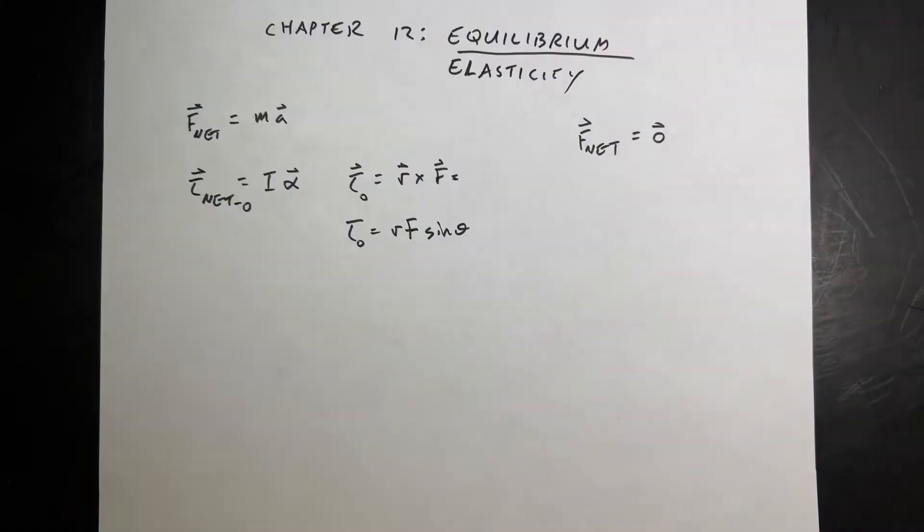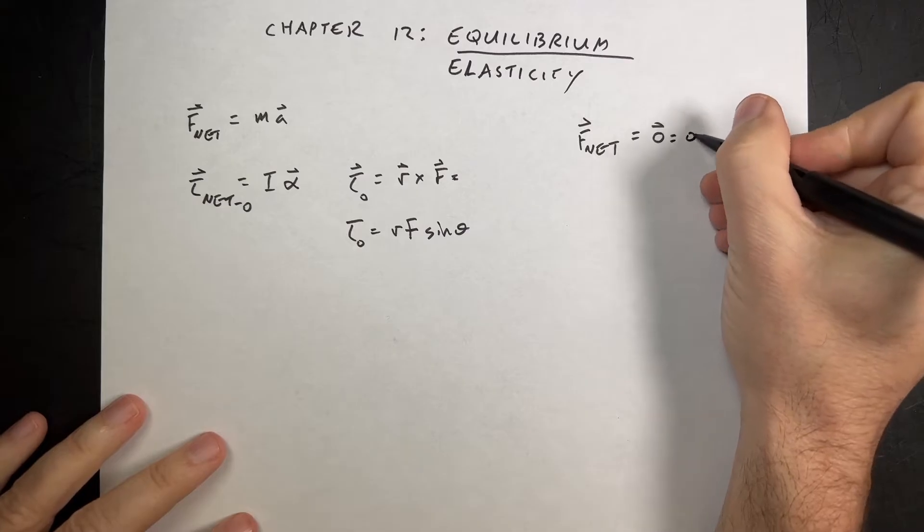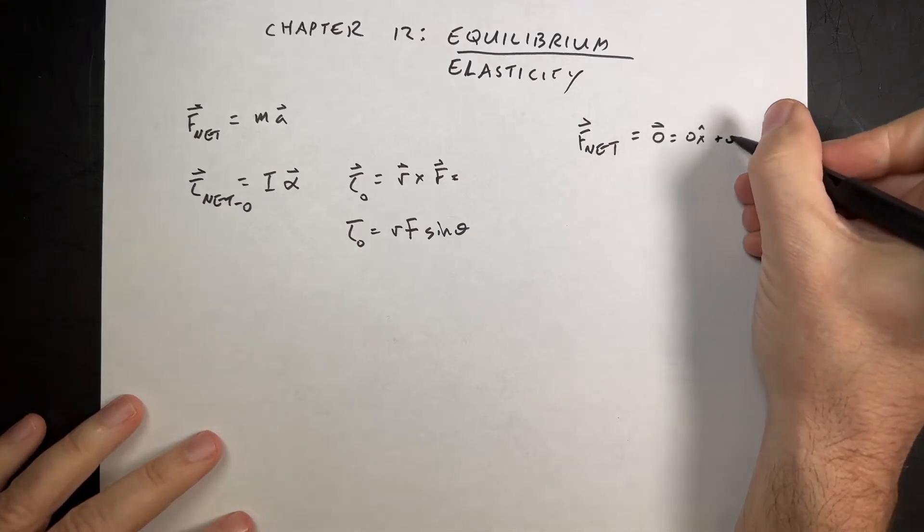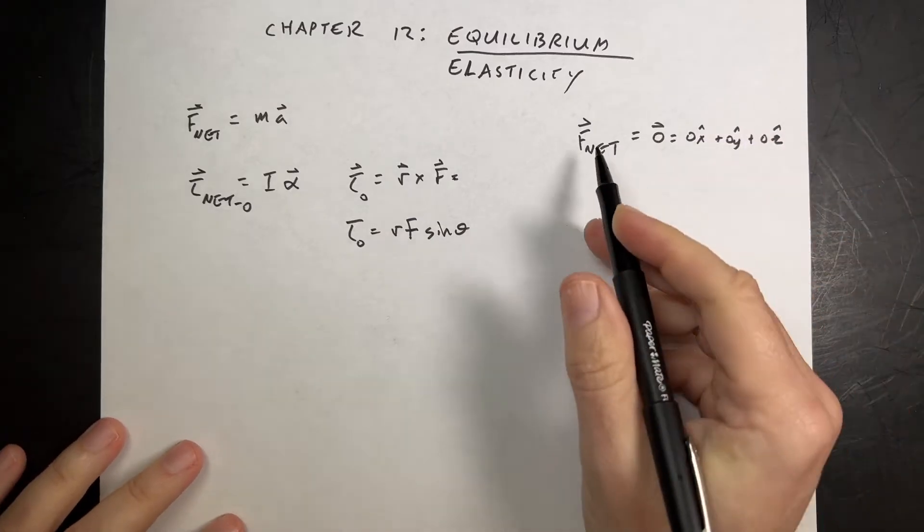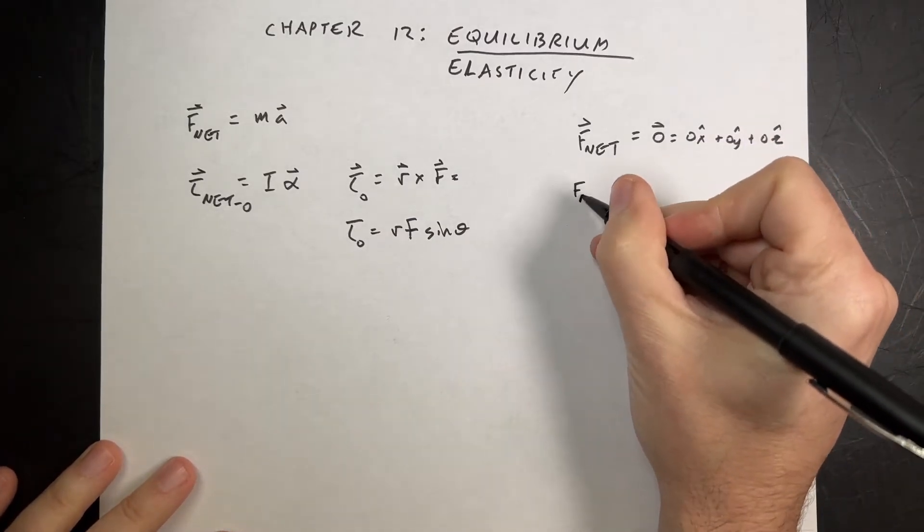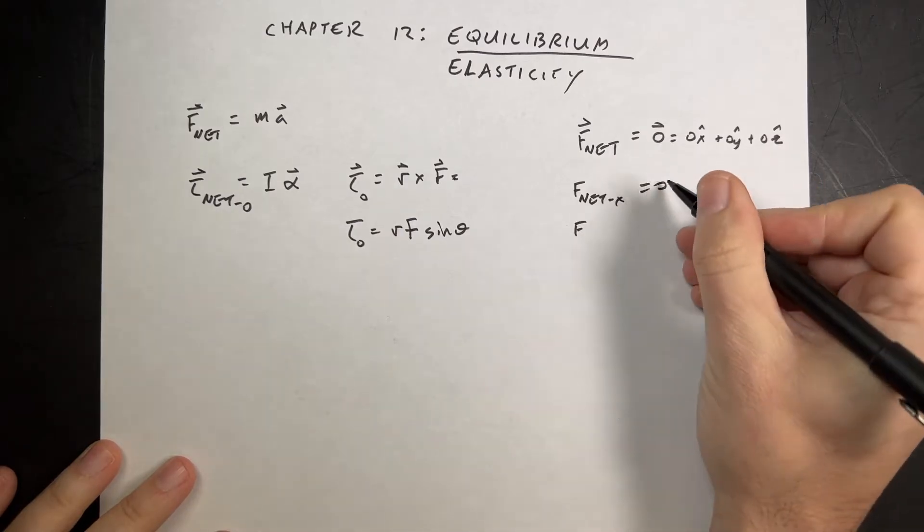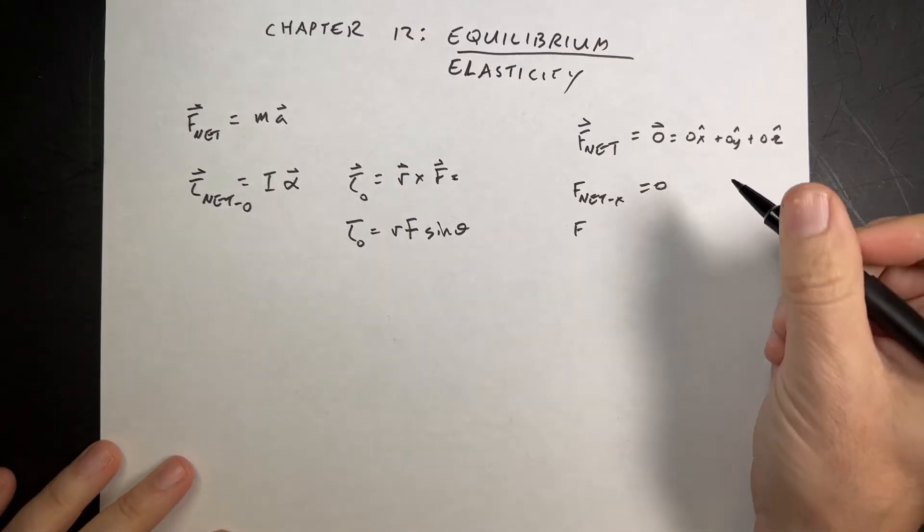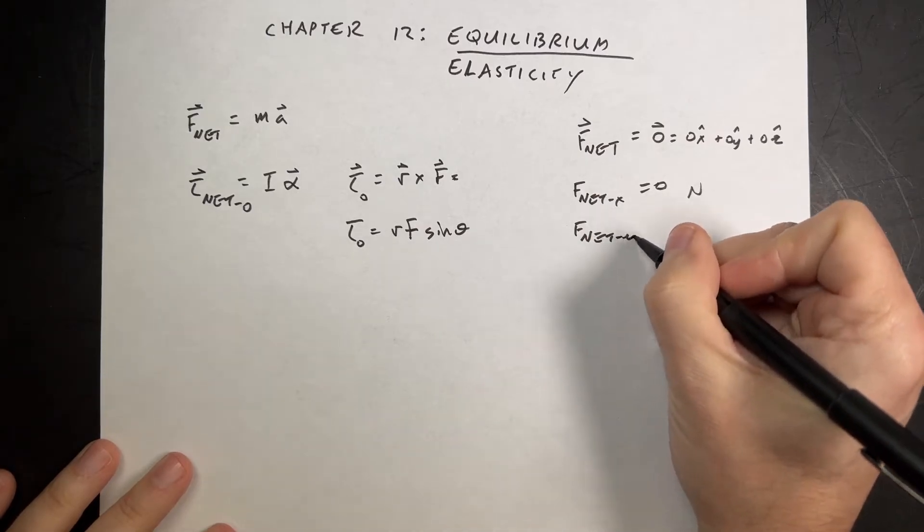And I take up issue with that because the zero vector is zero x hat plus zero y hat plus zero z hat. And so you could write this as F net in the x direction, zero. And you want to even put the units on there. Some people say you've got to put the units, newtons. That's fine. F net in the y direction is zero.